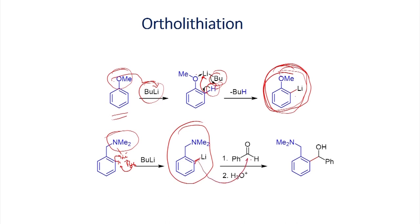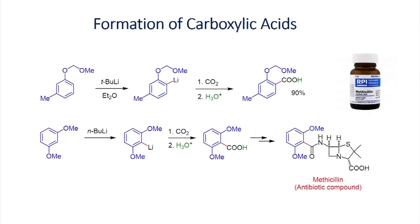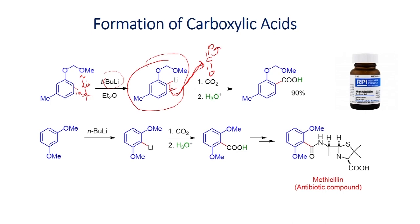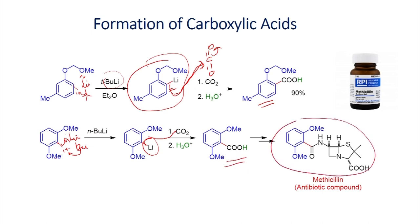Here the reaction of an aromatic system with tert-butyllithium is shown, where chelation with the oxygen occurs and the ortho proton is deprotonated, introducing lithium at the ortho position. The resulting ortho-lithium reagent undergoes addition reaction with carbon dioxide — as seen with the Grignard reagent — to give the addition product. In this way you can introduce a carboxylic acid into the aromatic ring. Similarly, two methoxy groups can chelate with lithium to deprotonate and introduce lithium; reaction with CO2 gives a carboxylic acid that has been converted into methicillin, an important antibiotic compound.